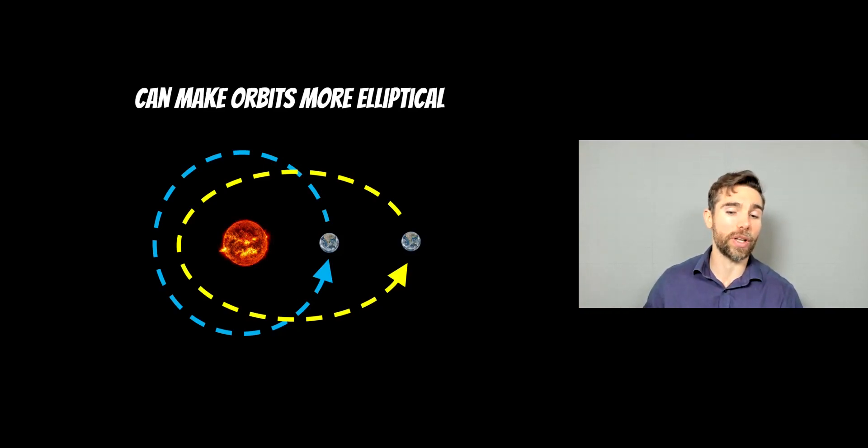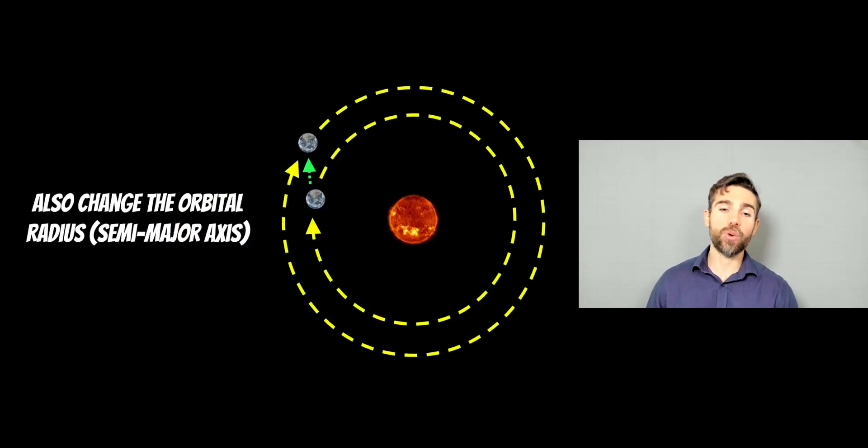That's one thing that it can do. It can also change the orbital radius, which is the semi-major axis of the orbit. So it can make it go further out. Maybe it can send it inwards. The point is, if you've got a complete system there, it actually can change all of them. And then the planets start to interact in different ways.